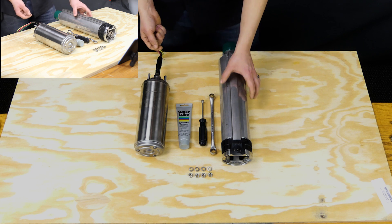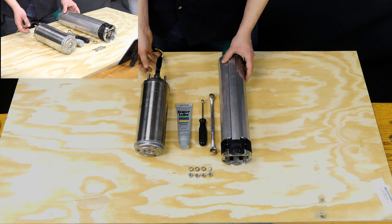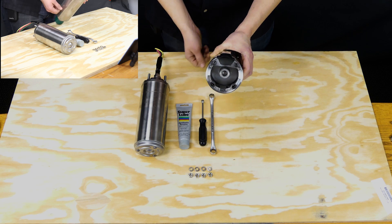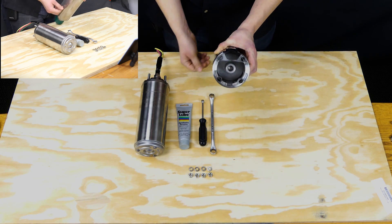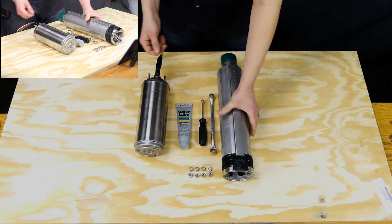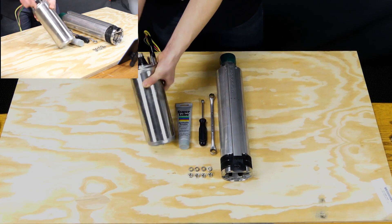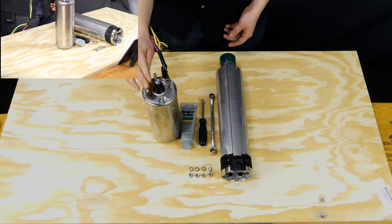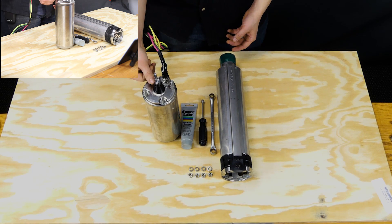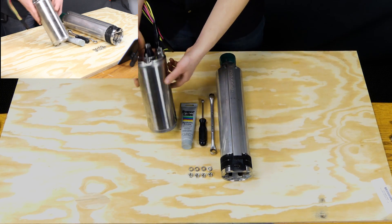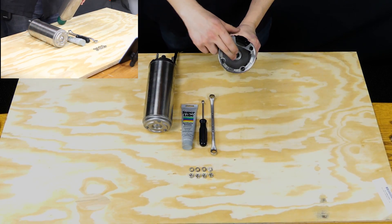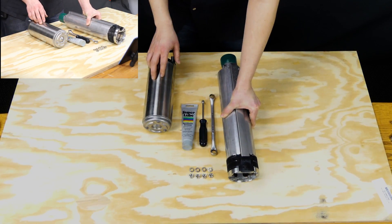By bolting these two together, what you're doing is inside of the bottom of the pump end is a shaft, or a shaft coupling. And then on the top of the motor, we have the shaft itself. This portion inserts just slightly into that shaft coupling and that's what rotates the pump.